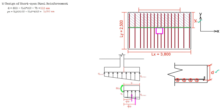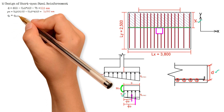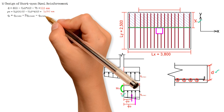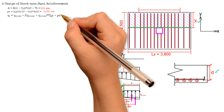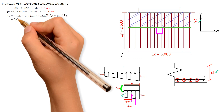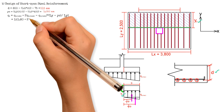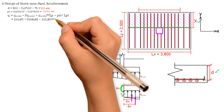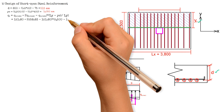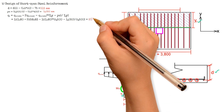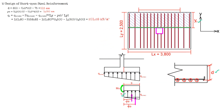To calculate for the moment Mu, we first compute q sub s, which equals q_u_y_min plus (q_u_y_max minus q_u_y_min) times (Ly minus y sub c) divided by Ly. We have 121.8 plus (258.83 minus 121.8) times (2500 minus 1050) divided by 2500, giving a value of 201.28 kN/m².